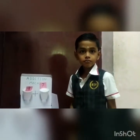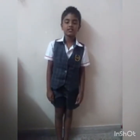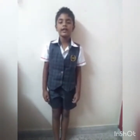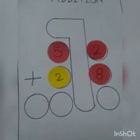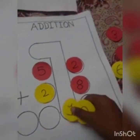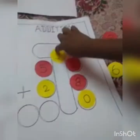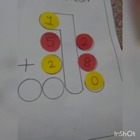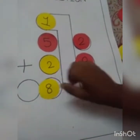That's all friends. Bye. Thank you. My name is Siddharth. I am studying in second standard A section. I am going to talk about addition. Addition means putting together. Let's start the addition. 52 plus 28: 2 plus 8 is 10, 1 plus 5 is 6, 6 plus 2 is 8. 80 is the answer.